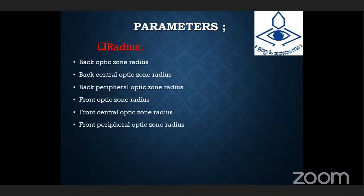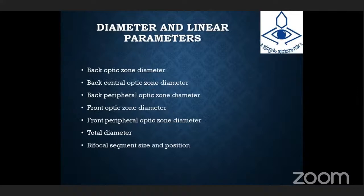Under the radius of curvature, we have the back optic zone radius, the back central optic zone radius, the front optic zone radius, and the front peripheral radius. Under diameters, we have the back optic zone diameter, back central optic zone diameter, back peripheral optic zone diameter, front optic zone diameter, front peripheral optic zone diameter, total diameter, and bifocal segment size and position.